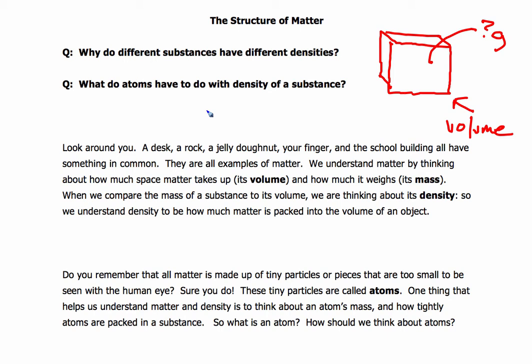Look around you. A desk, a rock, a jelly donut, your finger, and the school board building all have something in common — they are all examples of matter. We understand matter by thinking about how much space matter takes up, which is its volume, and how much it weighs, or its mass. So when we compare the mass of a substance to its volume, when we think about how many grams there are in a given volume of a substance...